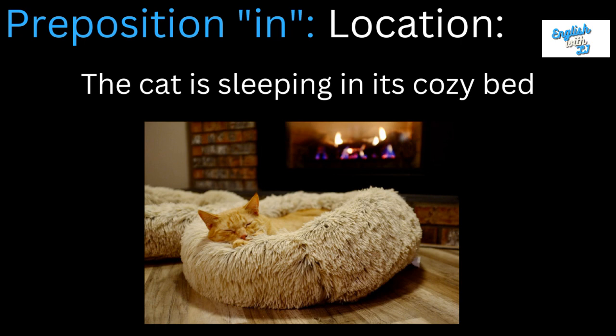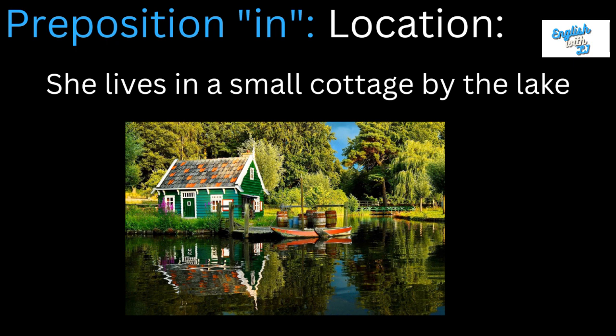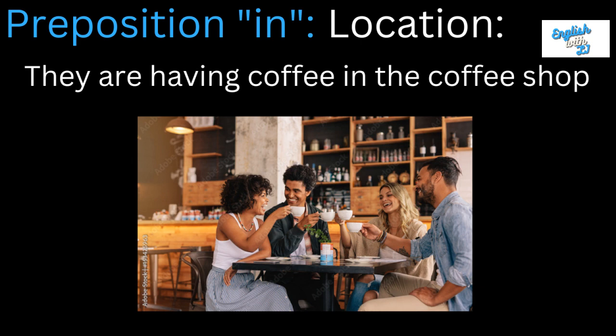Preposition 'in' for location. The cat is sleeping in its cozy bed — we have the bed and the cat is in the bed. She lives in a small cottage by the lake — so the person lives in this cottage, which is by the lake. Notice two prepositions here: 'in' for where somebody is living, and 'by' for where the cottage is. They are having coffee in the coffee shop — they are in the coffee shop.